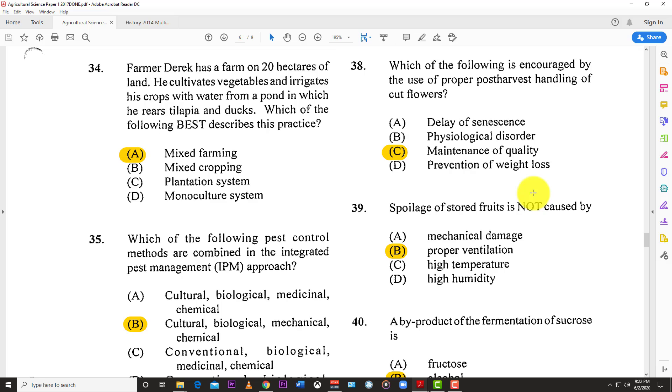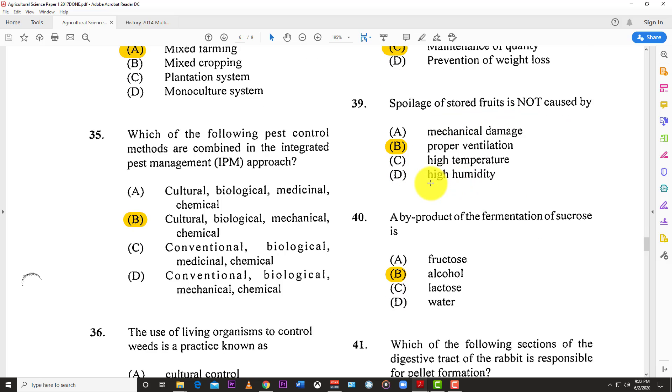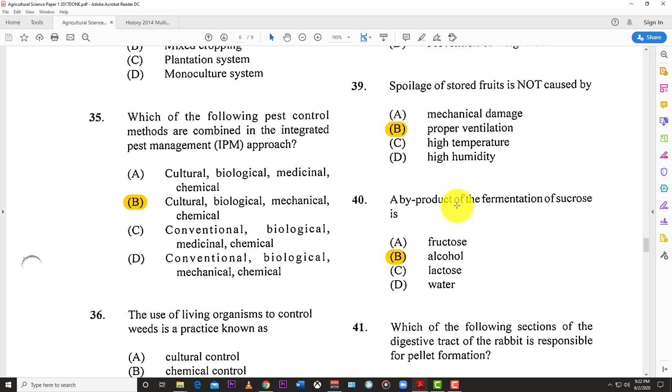Number thirty-eight: Which of the following is encouraged by the use of proper post-harvest handling of cut flowers? The answer is C, maintenance of quality. Normally, post-harvest can only maintain the quality you actually had. It cannot improve or change it. Most of these other options are factors that affect the quality, and all of this goes towards maintenance of quality.